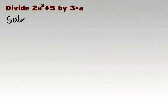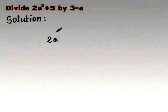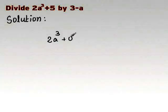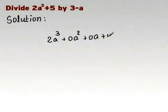Here, we are writing the division in the proper form, namely variables first and constants later. So, minus a plus 3 is the divisor.